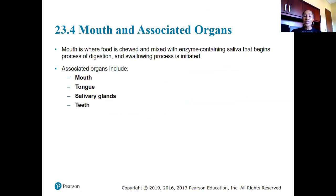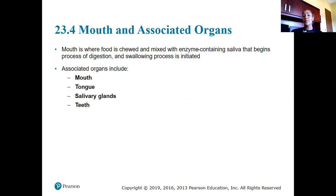Now we get into the functional anatomy of the digestive system — the actual organs and accessory structures and how they aid in digestion. Starting with the oral cavity or mouth: the mouth is where food is chewed and mixed with enzyme-containing saliva that begins the process of digestion, and the swallowing process is initiated.